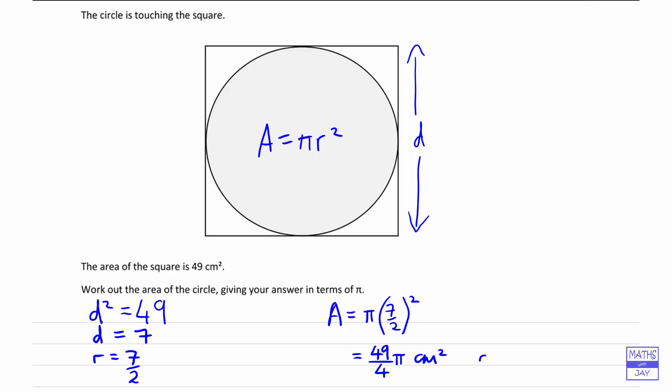You may like to write that as 49 pi over 4 centimetres squared. That will be fine too.